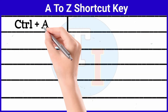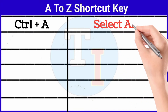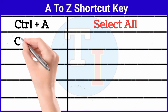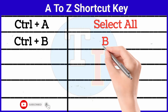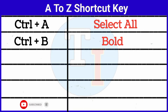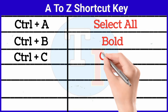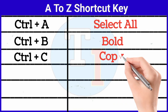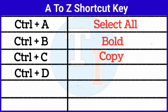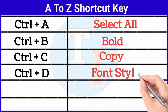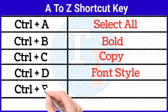Ctrl plus A: select all. Ctrl plus B: bold. Ctrl plus C: copy. Ctrl plus D: font style.